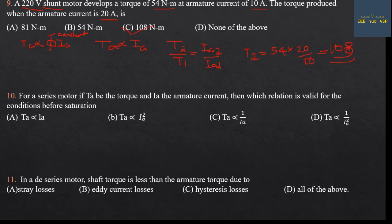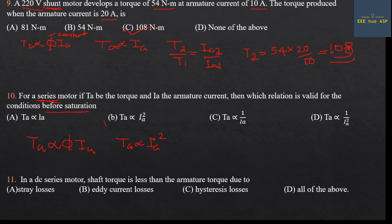Tenth question: For a series motor, if Ta is armature torque and Ia is armature current, which relation is valid before saturation? Torque Ta is directly proportional to flux times Ia. In a series motor before saturation, flux is proportional to Ia, so Ta is directly proportional to Ia squared. Answer: Option B — Ta ∝ Ia².